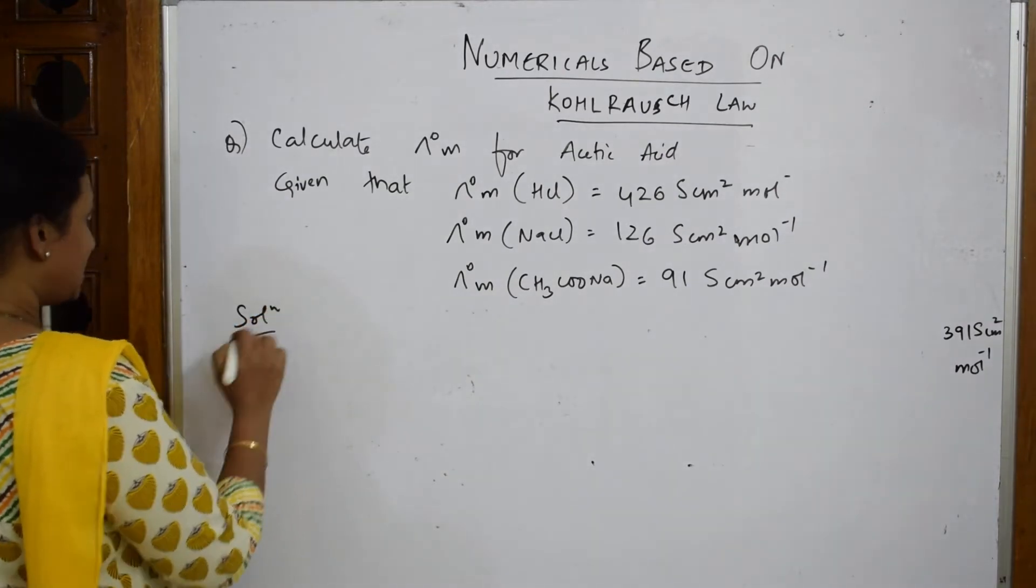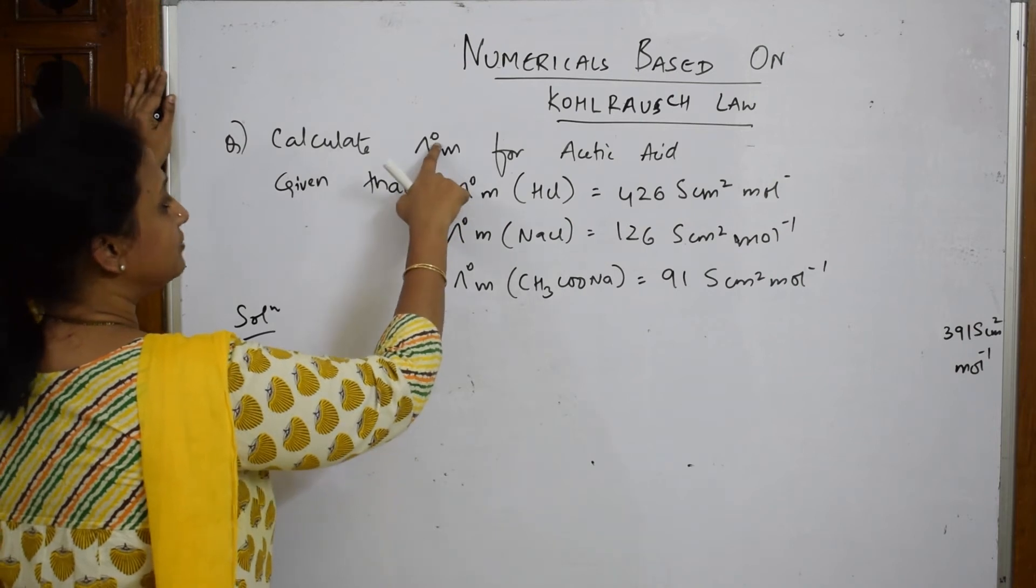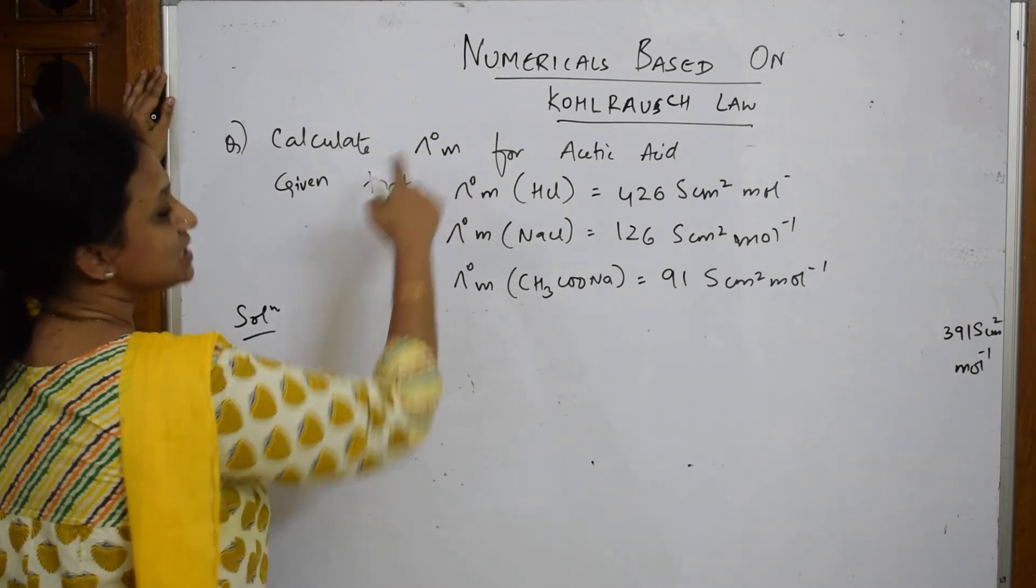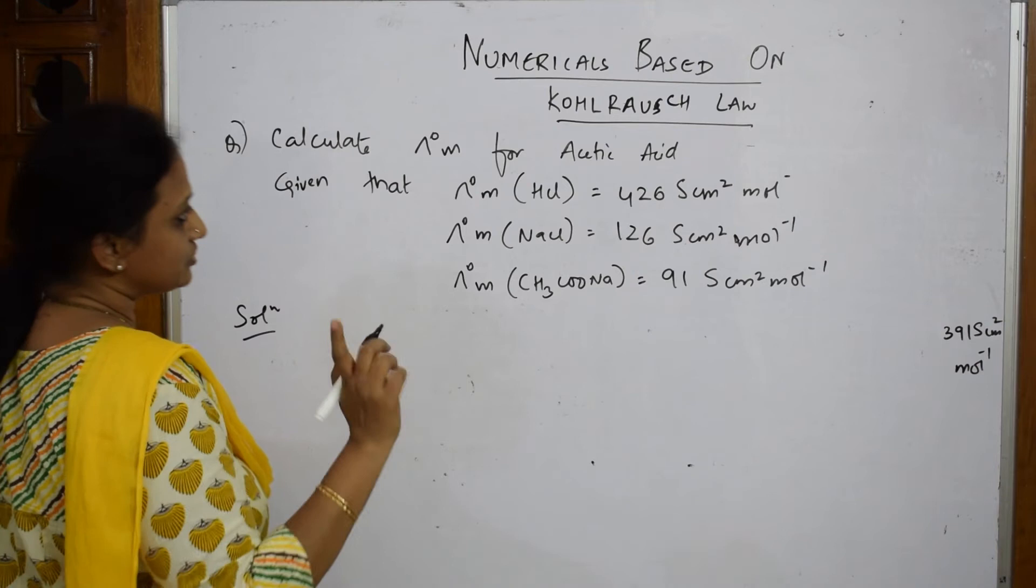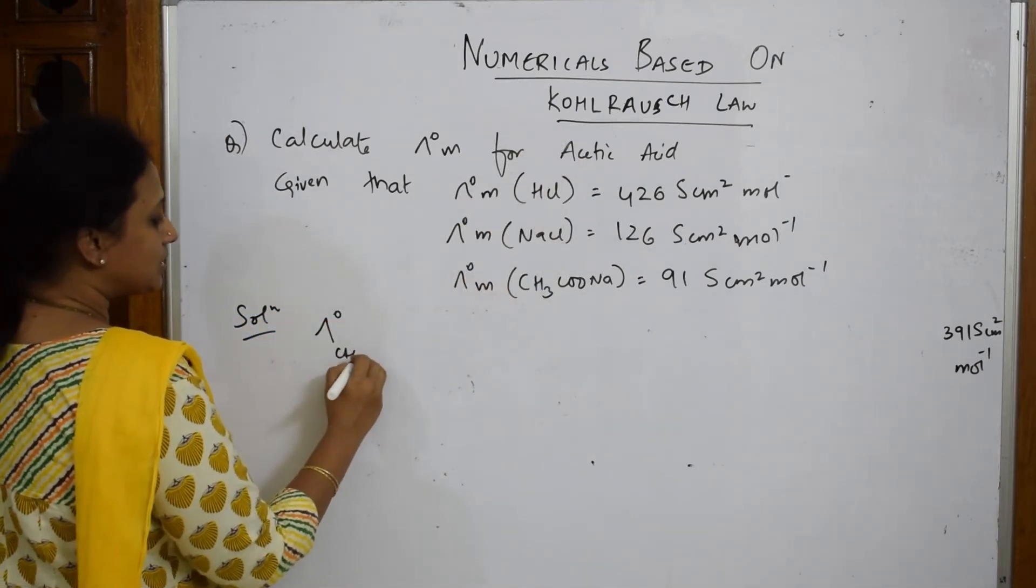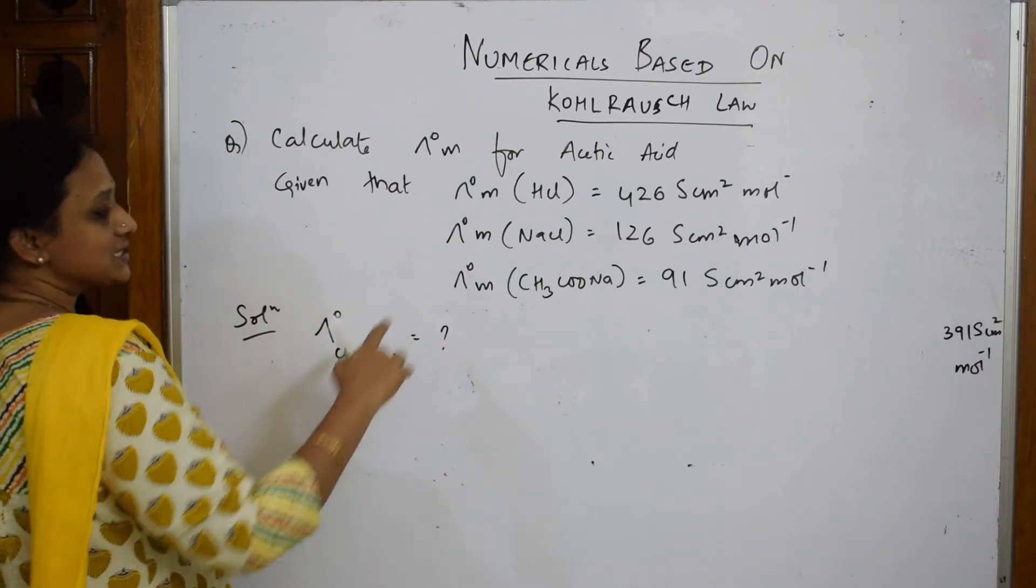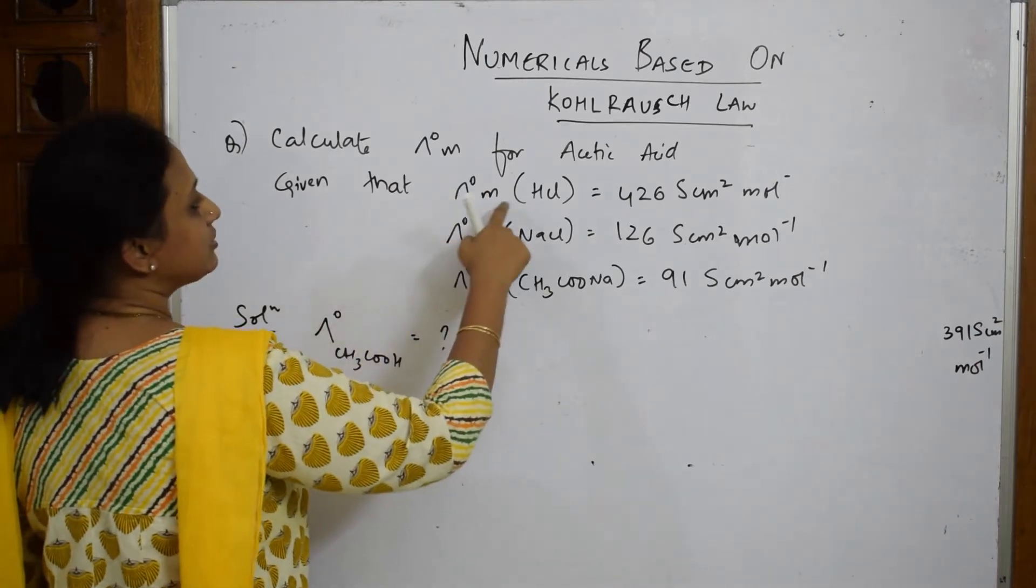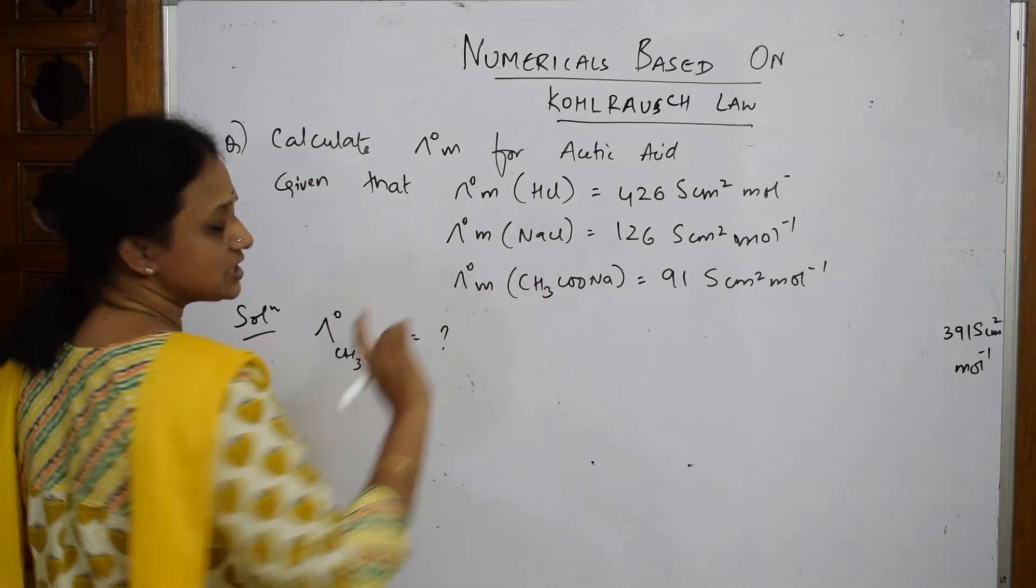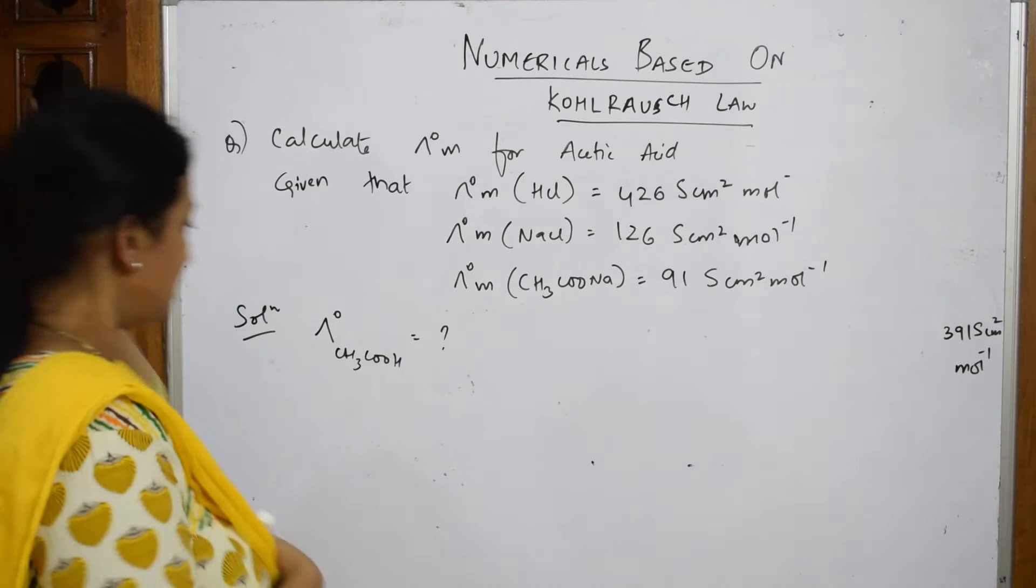So when I have to solve this, what do they give me? They've given me calculate molar conductivity at infinite dilution. This is limiting molar conductivity at infinite dilution which we have seen for acetic acid. I have to find out molar conductivity for acetic acid. What else is given? They've given us molar conductivity of HCl, NaCl, CH3COONa. So unit already given, then you can directly copy.